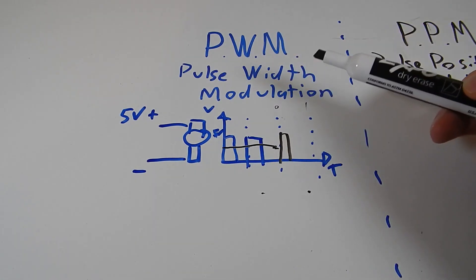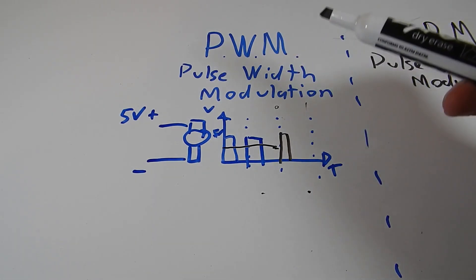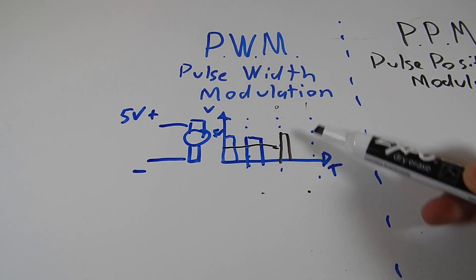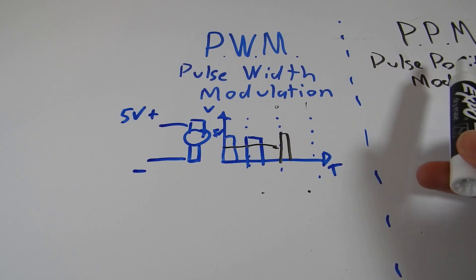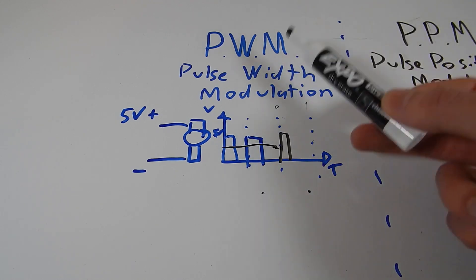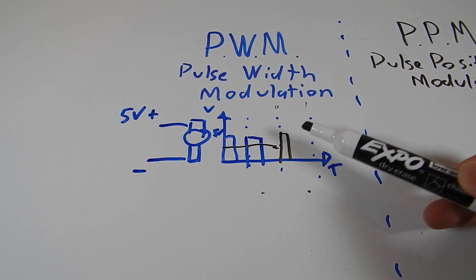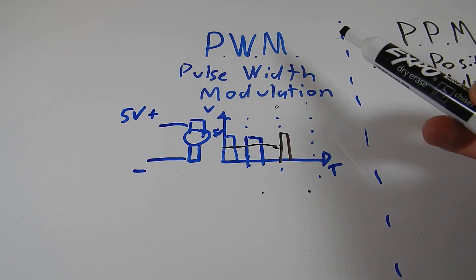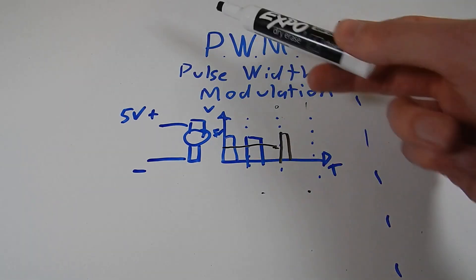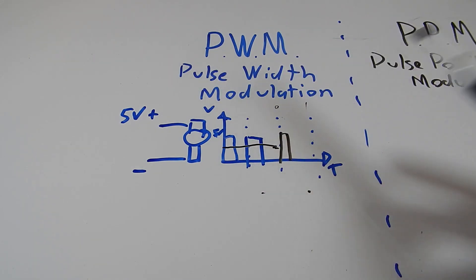As I said, even a commercially available brushed ESC will be converting the radio signal, which is PPM, which we'll talk about in half a second. It converts that into PWM and then pushes this through an H-bridge to up the power outage and dumps that into the motor. So that's what is going on when you're running an ESC.